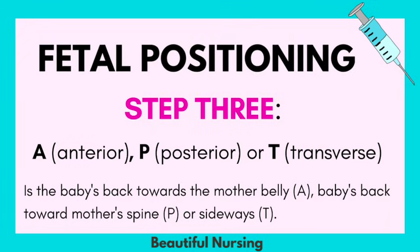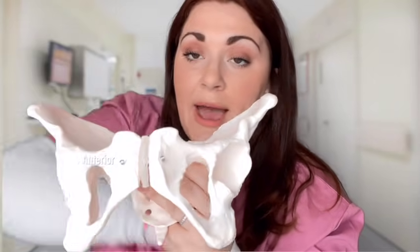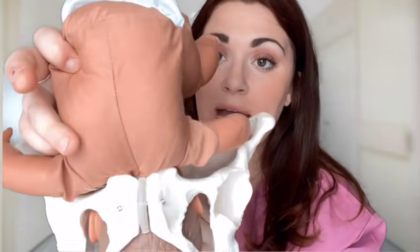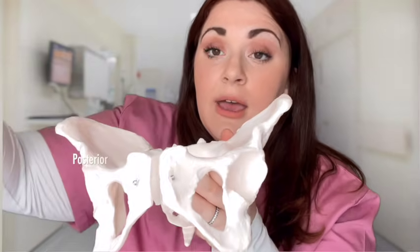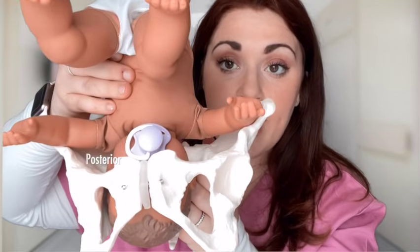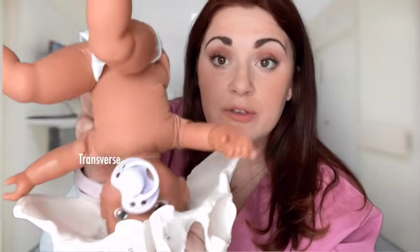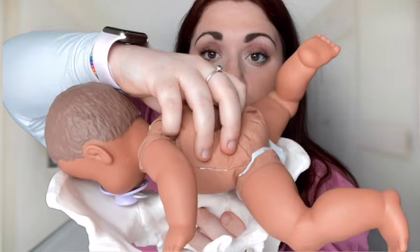Step three: you usually see the letters A, P, or T. A for anterior, P for posterior, and T for transverse. Is the baby's back towards mother's belly — anterior — back towards the mother's spine — posterior — or sideways? Anterior means the baby's back is going to be towards the front of the mother. This is the front of the mother, this is the back. If it's posterior, Gina's back is towards mama's spine — they're aligned together. And if Gina is going to be transverse, she's going to be sideways.